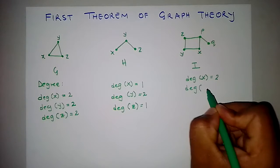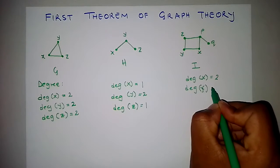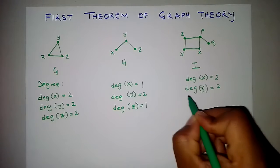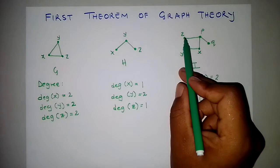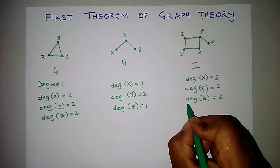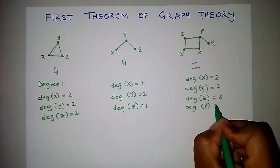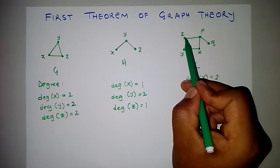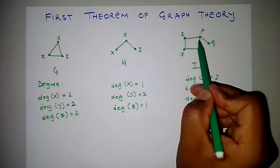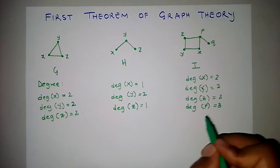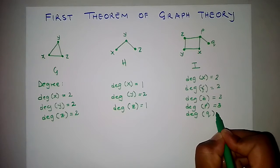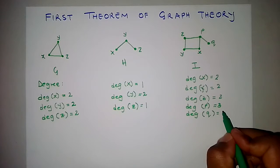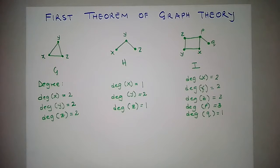The degree of vertex Y is 2. The degree of vertex Z is also 2. The degree of vertex P is 3, because P is adjacent to 3 vertices: Z, X, and Q. And lastly, the degree of vertex Q is only 1 — Q is adjacent to vertex P.